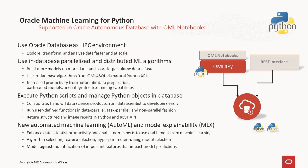Data scientists benefit from automatic data preparation, partitioned model ensembles, and integrated text mining. This can result in increased productivity for data scientists, while at the same time the powerful in-database algorithms are made more accessible to non-expert users. Data scientists and other users can create user-defined Python functions and manage these as scripts in the database. Python objects can also be stored in the database, as opposed to being managed in flat files. These features facilitate collaboration across the data science team, enabling convenient handoff of data science work products from data scientists to application developers for immediate deployment. Moreover, these user-defined functions can be run in a data parallel or task parallel manner, for example, to enable scoring native Python models at scale.